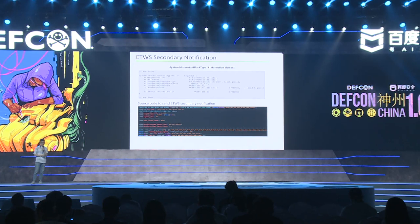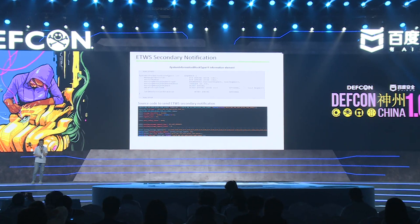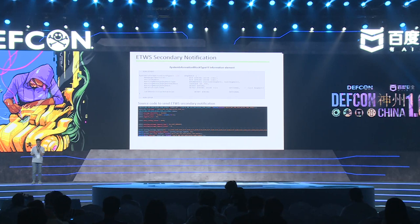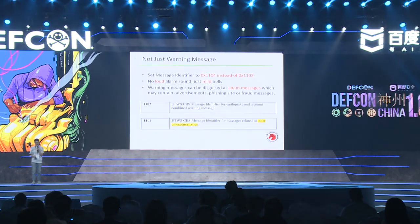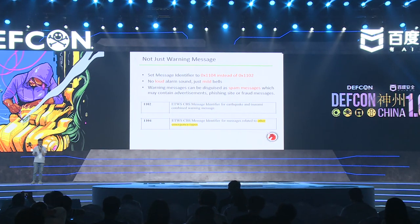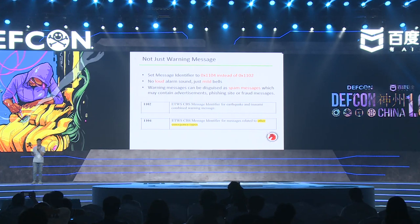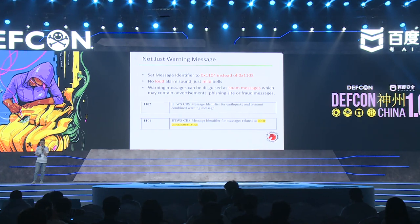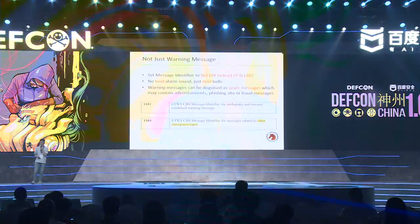This is the architecture of SIB11, which defines the secondary notification. The picture below shows the source code we added in srsLTE to send the secondary notification. Because the secondary notification can be customized, we can add anything we want into it. For example, if we want to send an earthquake warning message, we can add the earthquake epicenter, magnitude, time, and location to make it look more like a real one.